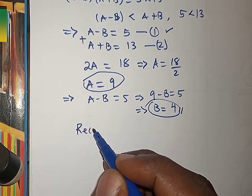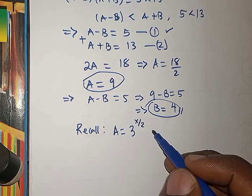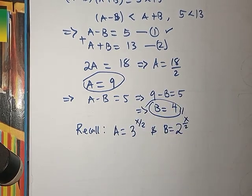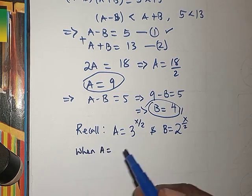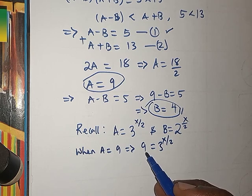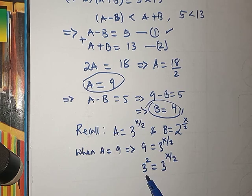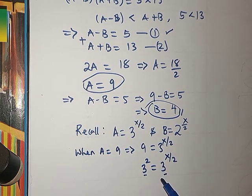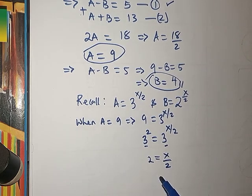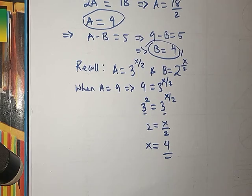Recalling that A equals 3^(x/2), we substitute: 9 equals 3^(x/2). We rewrite 9 as 3^2, giving 3^2 equals 3^(x/2). Since the bases are the same, we equate the exponents: 2 equals x over 2, therefore x equals 4.